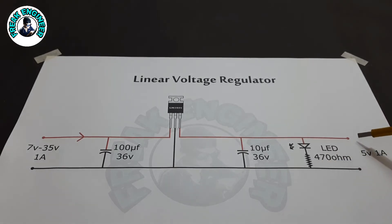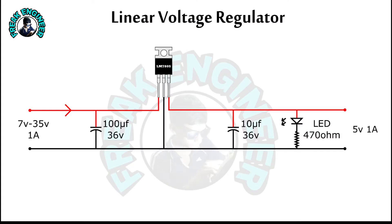Here we get our output of 5 volts and 1 ampere. This type of voltage regulators are known as linear voltage regulators. The merit of this type of linear regulators is they have a very simple circuit.